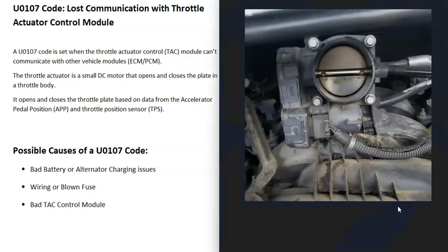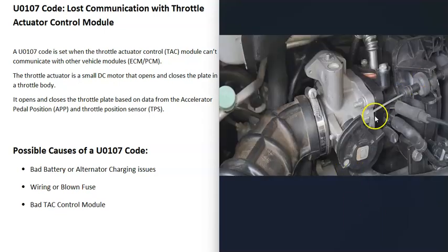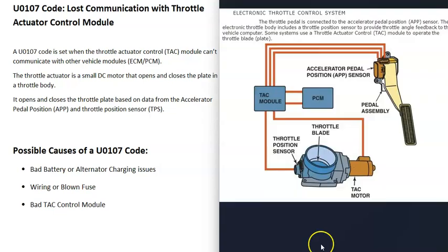Fuel-injected engines have a throttle body, and this is where all the air goes into the engine. There's a small plate that opens or shuts to regulate how much air can go into the engine. When throttle bodies were first introduced, there used to be a cable that went to the gas pedal, and when the gas pedal was pressed, it opened up that plate, allowing more air to go into the engine.